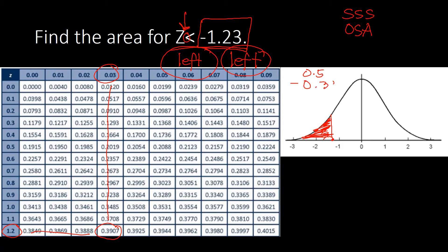Subtracting 0.3907 from 0.5, and borrowing as needed, we get 0.1093, which can also be expressed as 10.93%. Your work finding the area becomes much easier when you keep in mind the SSS and the OSA. Let's move to the next example.